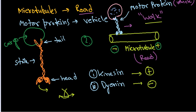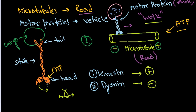Motor proteins obviously require energy for movement, and that energy is provided by adenosine triphosphate, or ATP. There are ATP-binding domains present in their head region. Once ATP is attached to one part of the head, that part sticks to the microtubule. Once the ATP is hydrolyzed, that section of the head lifts up from the microtubule, rotates, and the process continues.